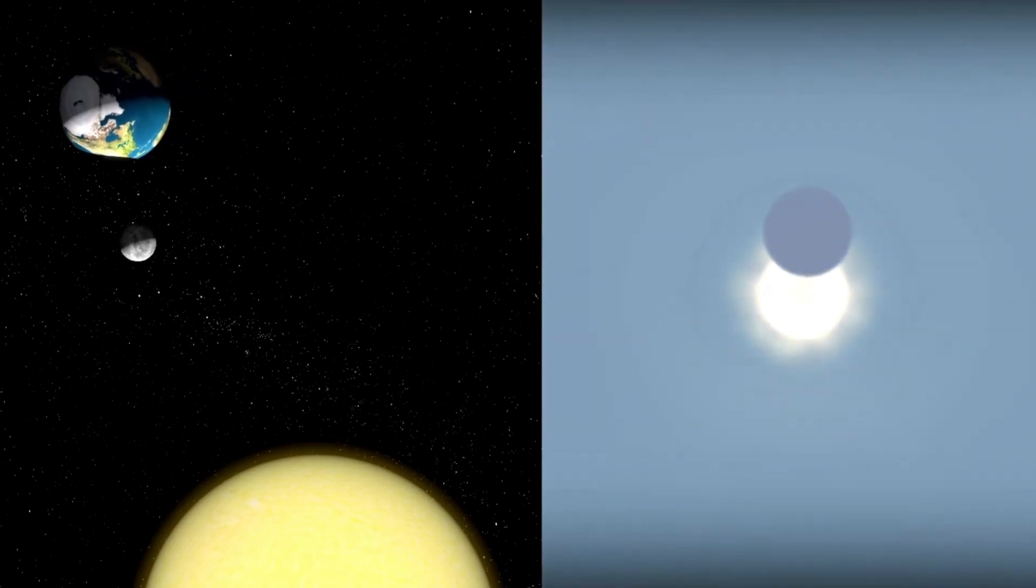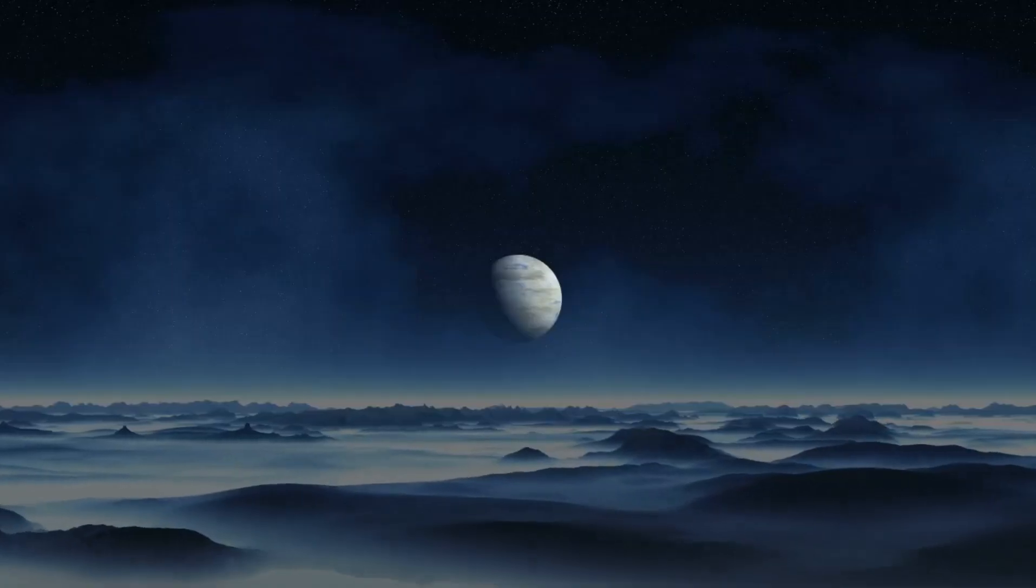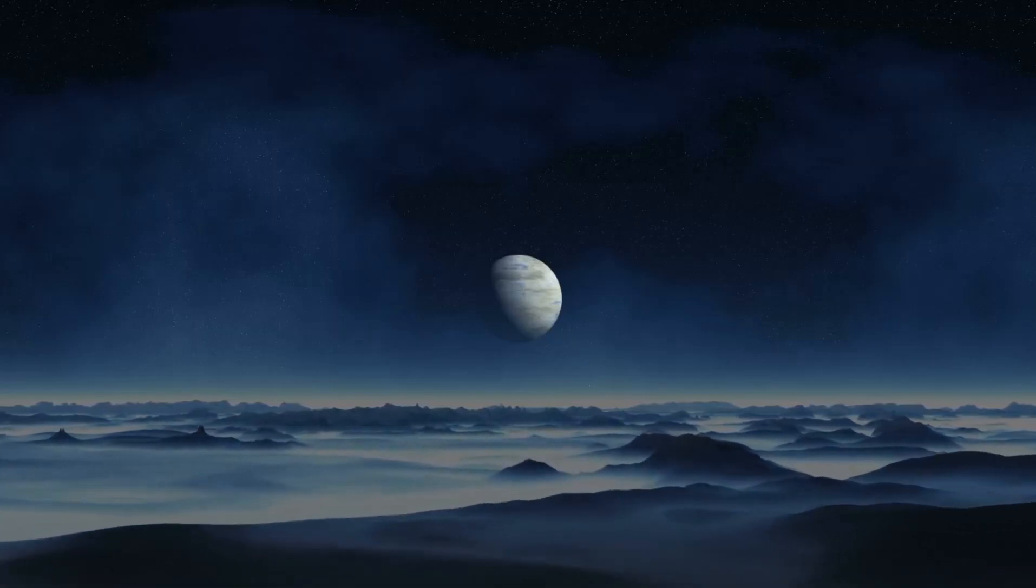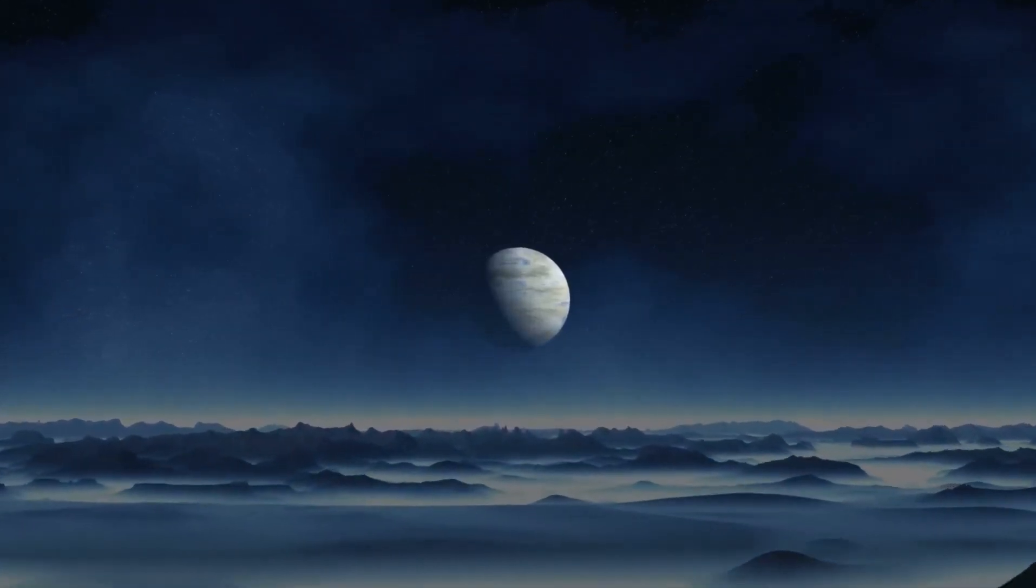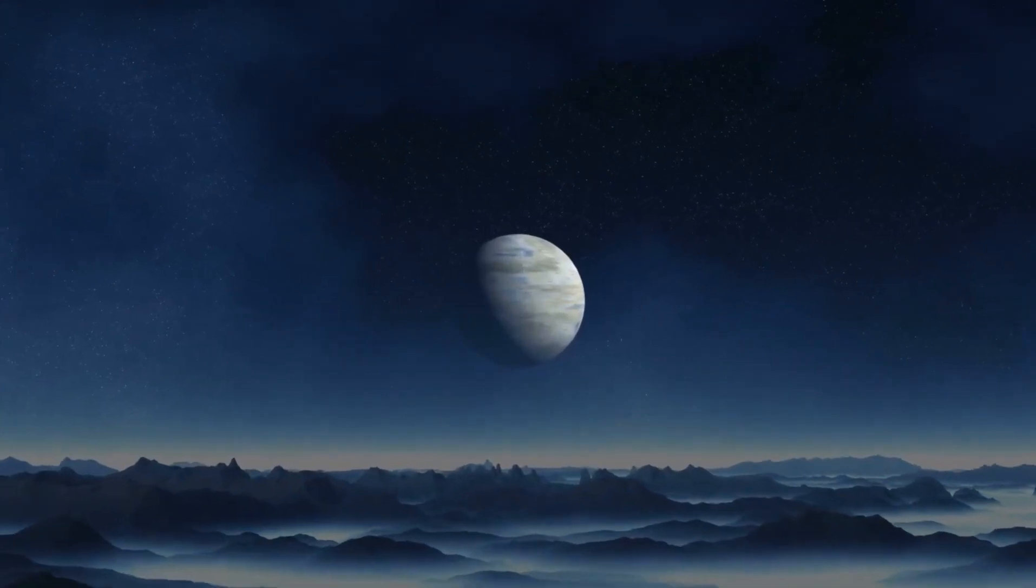K2-18b orbits within the habitable zone of its host star, a red dwarf known as K2-18. This is a region around a star where conditions might be just right for liquid water to exist, one of the key ingredients for life as we know it.